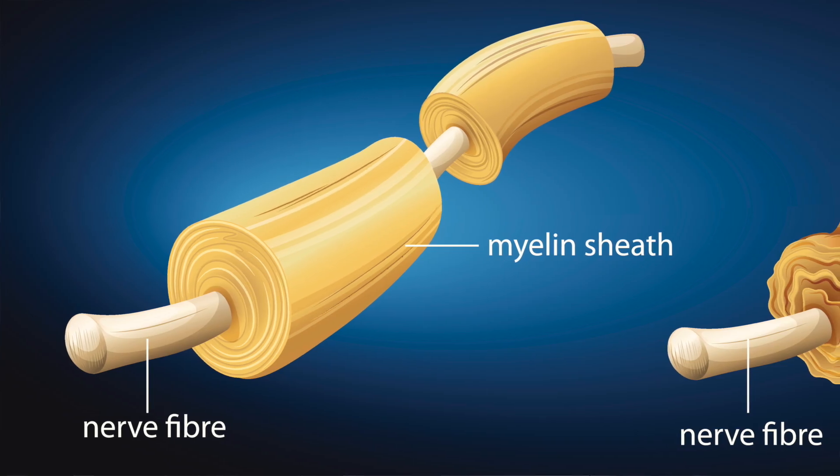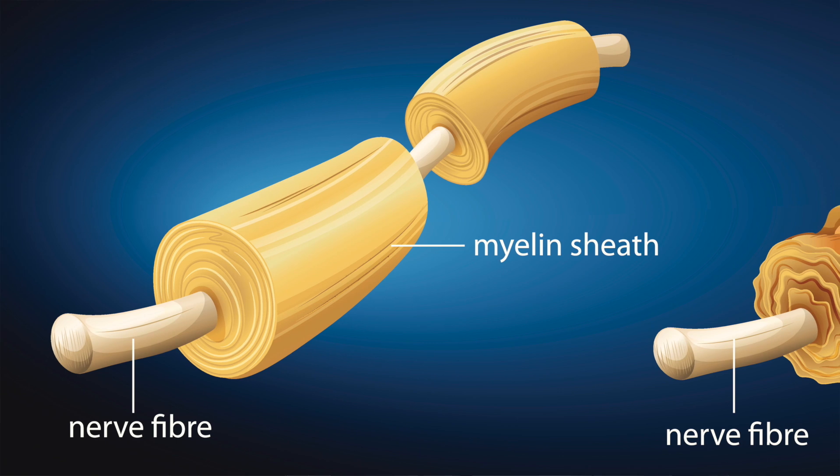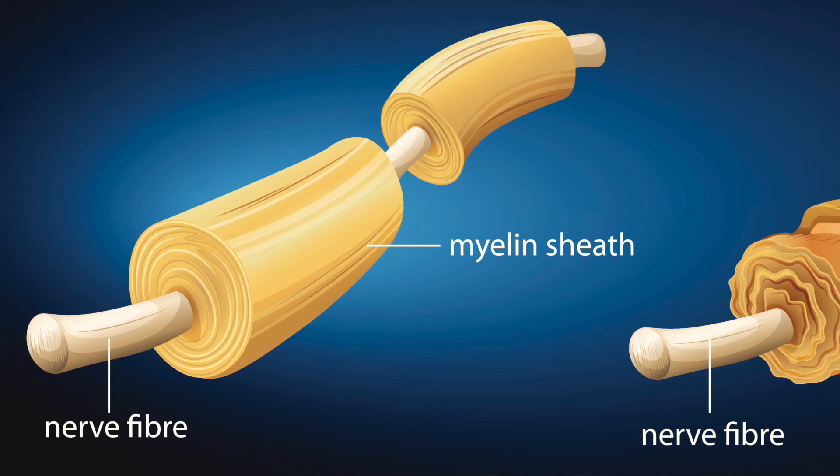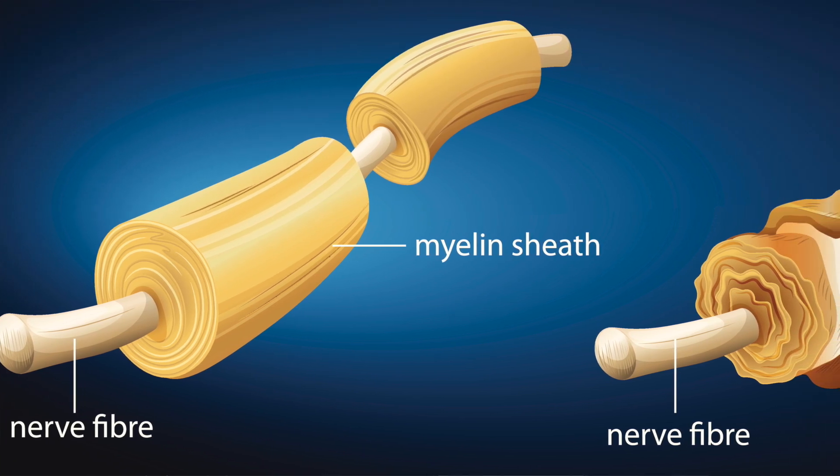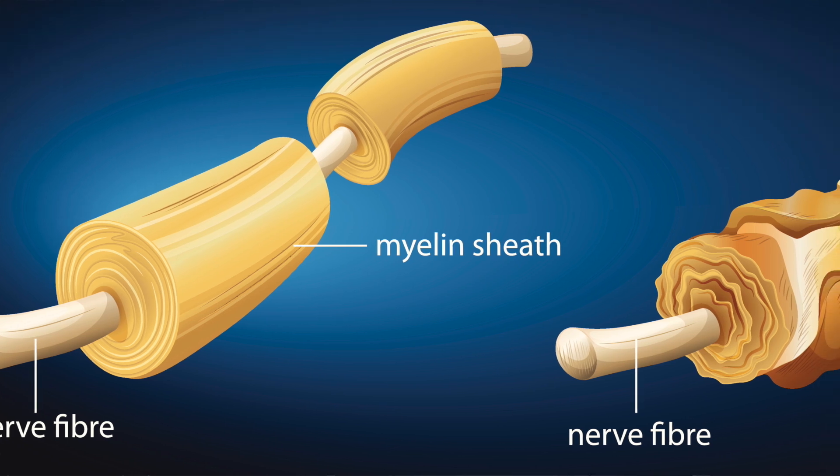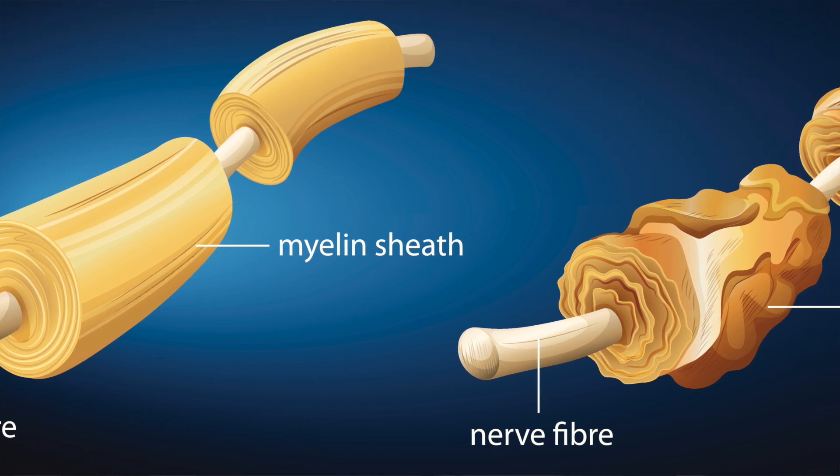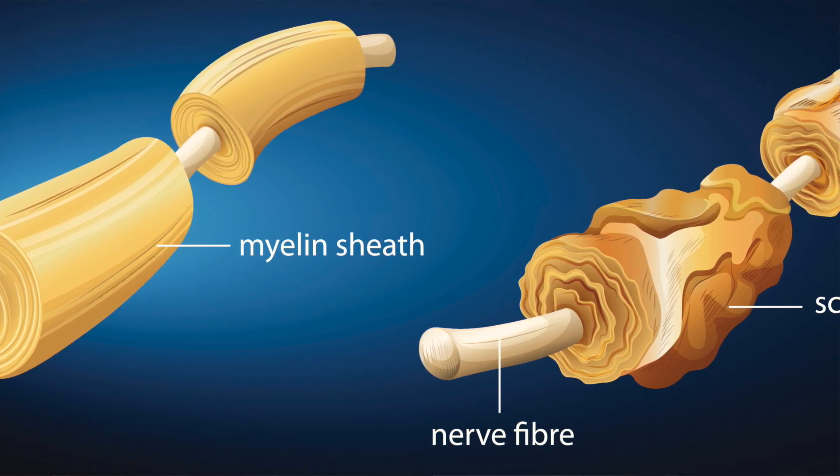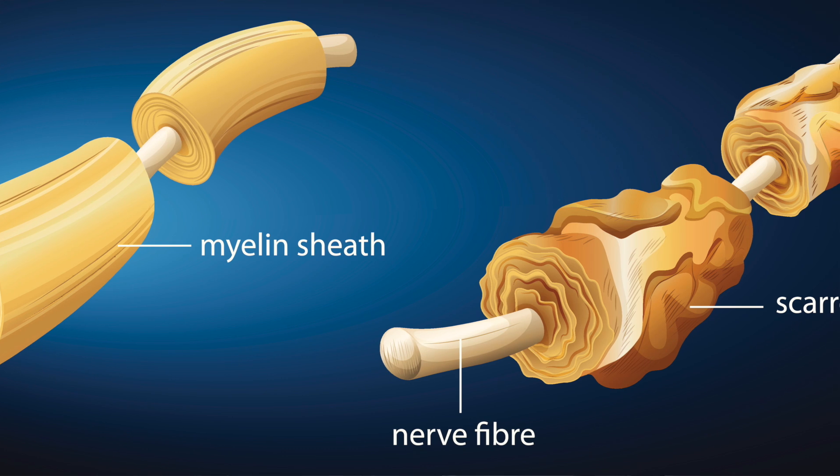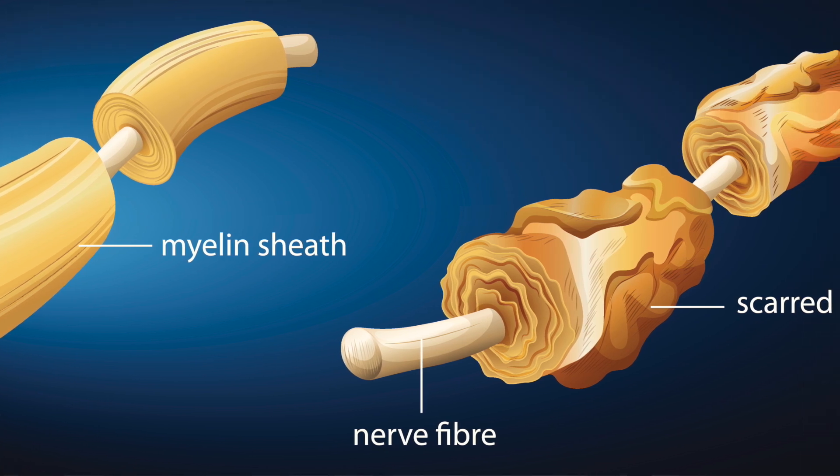These nerve fibers are surrounded by an insulating layer called myelin. Myelin acts as a protective layer around the nerve fibers. Think of an electrical wire with a plastic casing on the outside holding in the many wires inside. But the myelin also serves for more than just protection.